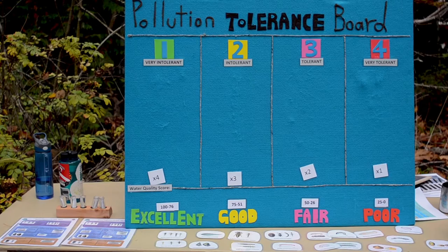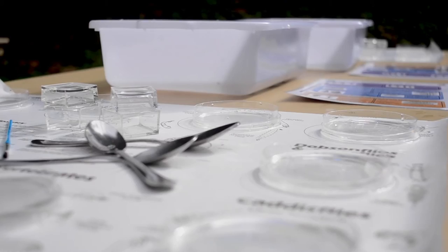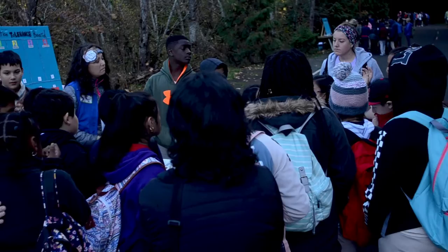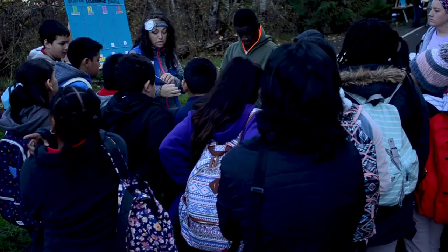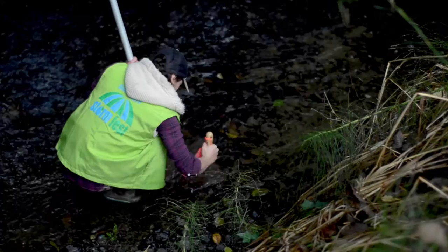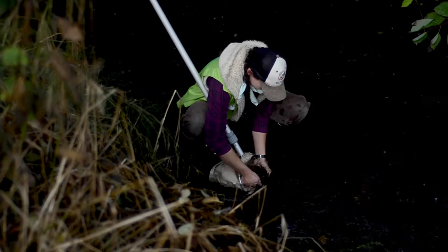At the stormwater pollution or macroinvertebrate station, students will learn how macroinvertebrate—or stream bug—tolerance relates to water quality, create a pollution tolerance index using macroinvertebrates from Des Moines Creek, and share at least one action they can do at home to keep stormwater clean. Educators will introduce the concept of tolerance and how it can be used to measure stream health, then explain aquatic macroinvertebrates—what they are and what their name means—and explain the sampling process, stressing the importance of trained naturalists collecting samples to avoid harming the organisms or their habitat.